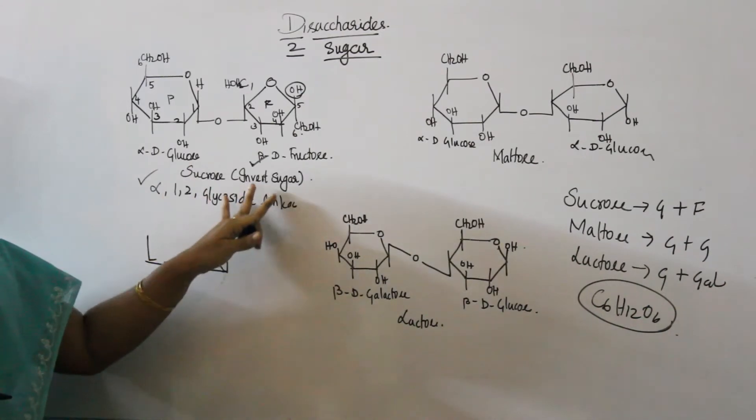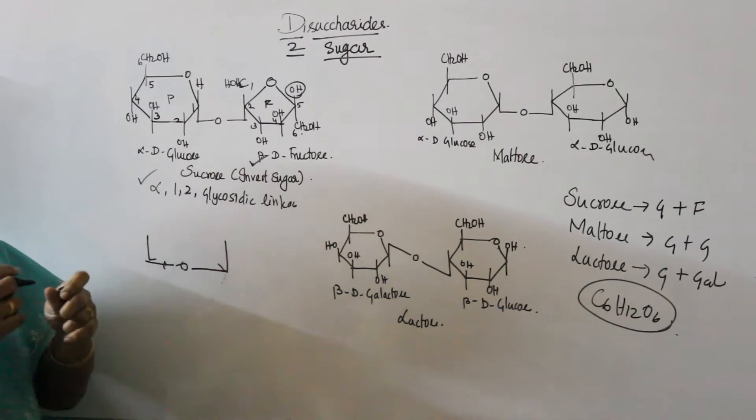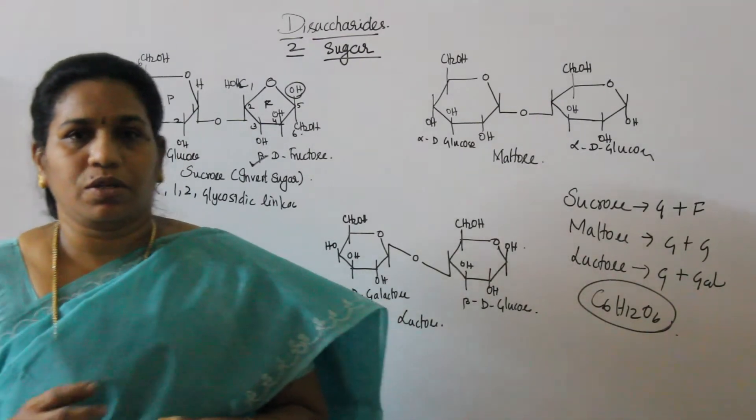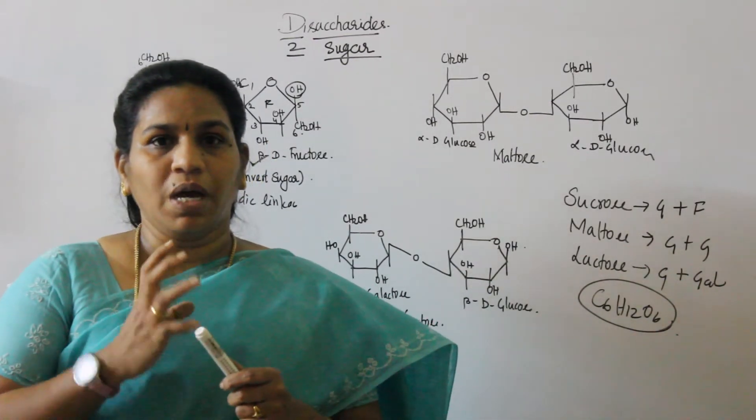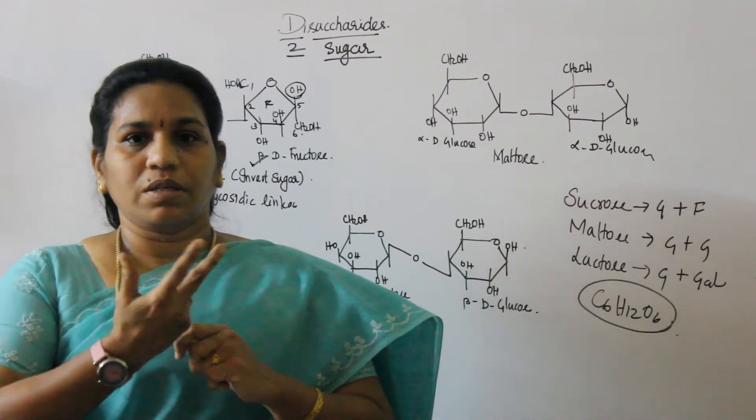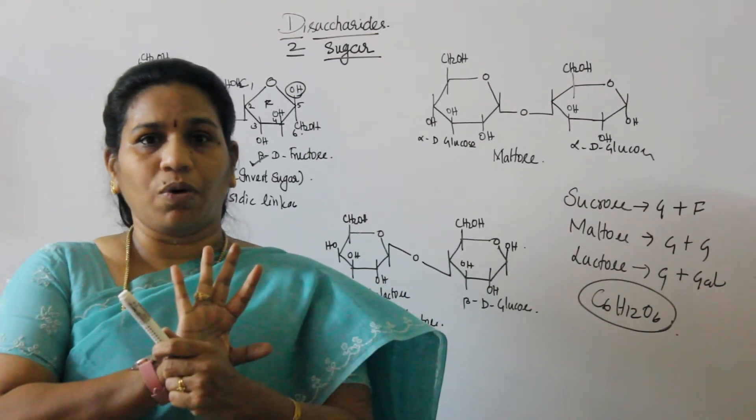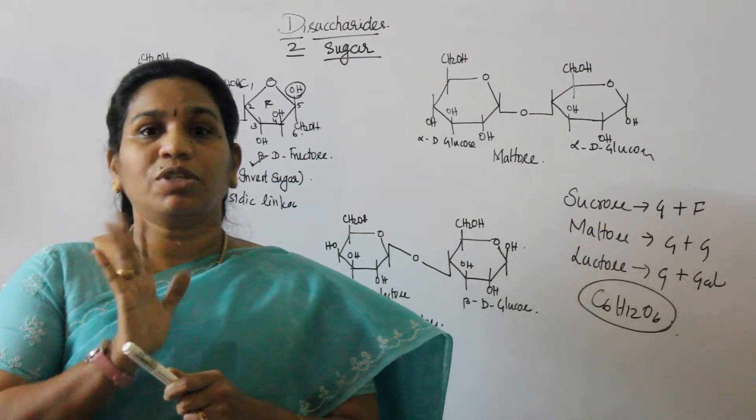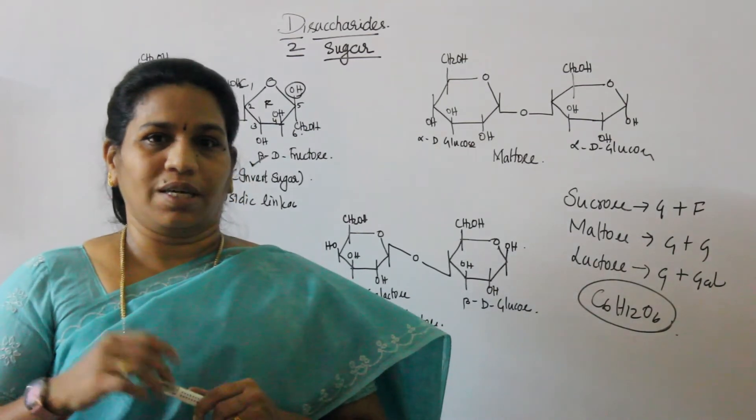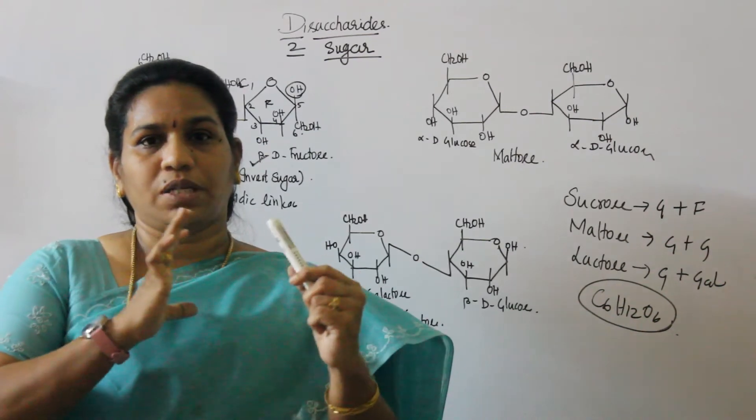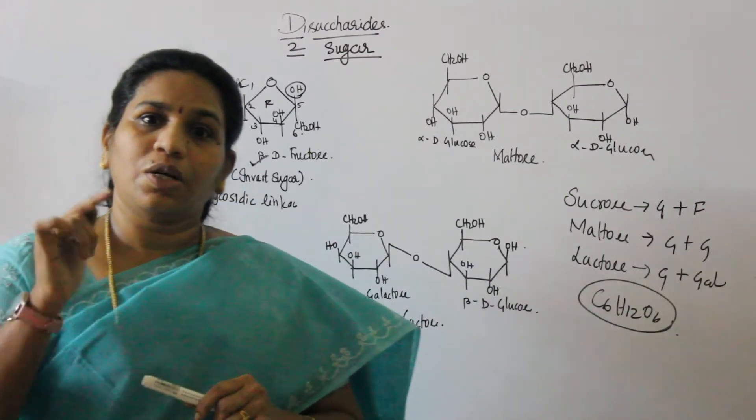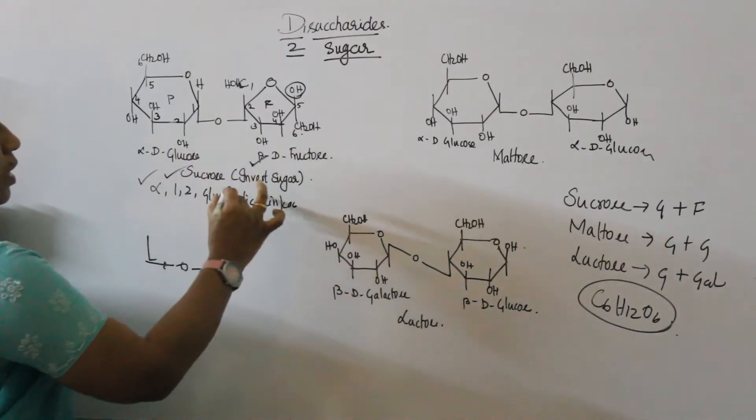Sucrose is called invert sugar. Sucrose in its basic nature is dextrorotatory. But when you attain equilibrium, dextrorotatory changes to levorotatory. Levorotatory is minus, anticlockwise. Clockwise is dextrorotatory. So changing from dextrorotatory to levorotatory, it's called invert sugar. And it is a non-reducing sugar.